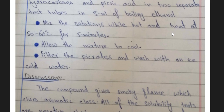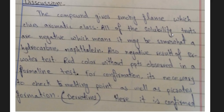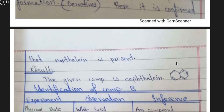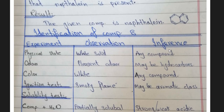Now the discussion: the compound shows a smoky flame, meaning it is aromatic. Solubility tests were all negative — it was insoluble — indicating hydrocarbons or naphthalene. Negative results also came from functional group tests, including a formalin test. The melting point test and the derivative (picrate) test have finally confirmed that Component A is naphthalene.